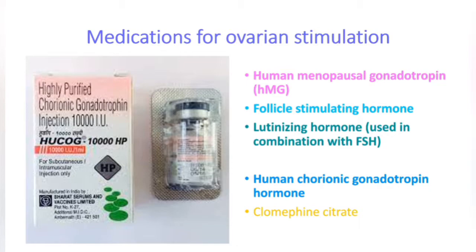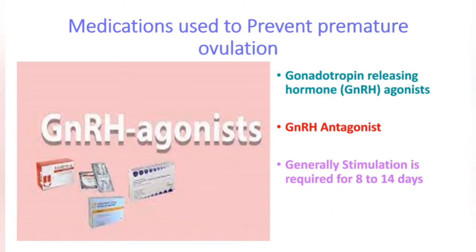Medications commonly used for ovarian stimulation include human menopausal gonadotrophin, follicle stimulating hormone, luteinizing hormone (used in combination with FSH), human chorionic gonadotrophin hormone, and clomiphene citrate. Medications used to prevent premature ovulation include gonadotrophin releasing hormone agonists and antagonists. Generally, stimulation requires 8 to 14 days.